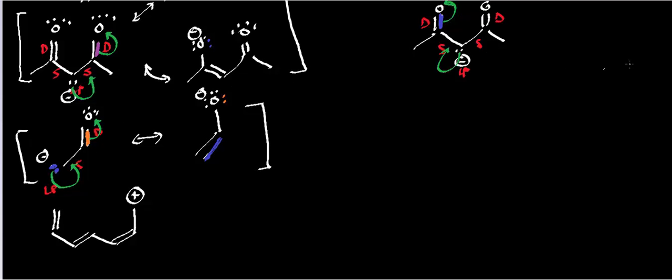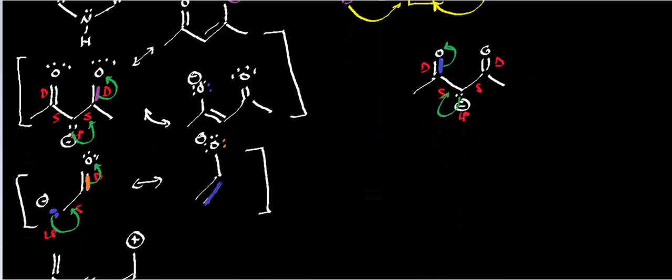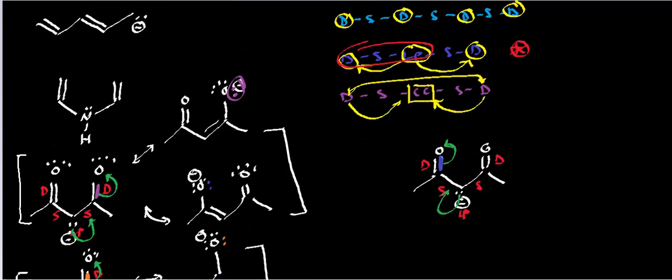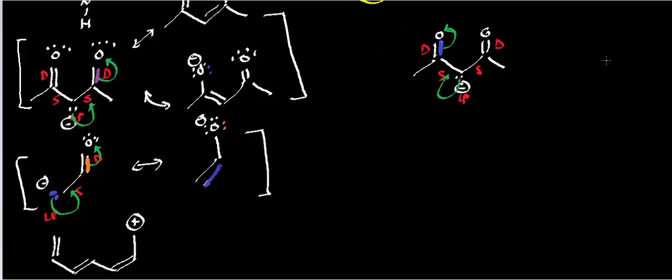Hopefully what you're seeing in these examples is that if you have a lone pair in resonance with other parts — separated from the double bonds by a single bond — you preferentially want to try to move the lone pair first. You're not moving the double bond first, and you're not moving carbocations. Move the lone pair first. If you determine that the lone pair is in resonance with a double bond, try moving the lone pair first and you'll probably get the right answer.